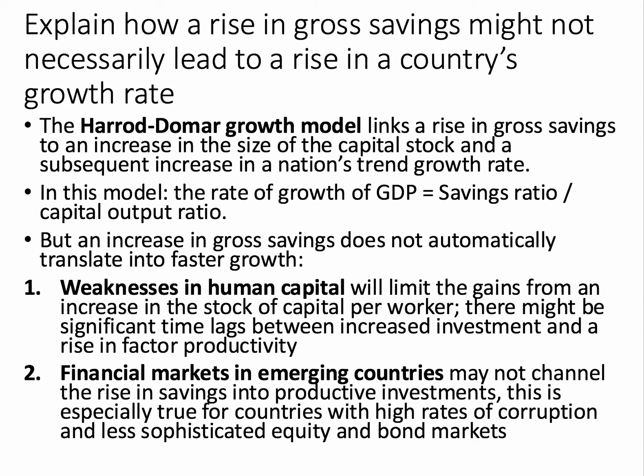How might a rise in gross savings not necessarily lead to an increase in a country's growth rate? This question hints at the well-understood Harrod-Domar growth model, which links an increase in gross savings to an increase in the capital stock, and therefore, if the capital stock increases, an increase in the country's trend growth rate, because workers and businesses have more capital to use. In the basic Harrod-Domar model, the rate of growth of GDP equals the savings ratio divided by the capital-to-output ratio. We have a separate video on the Harrod-Domar model on our YouTube site.